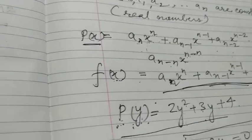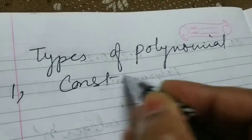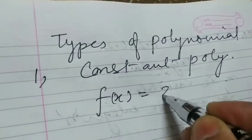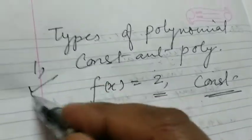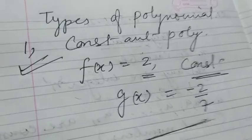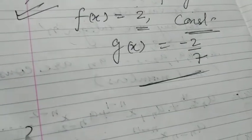On the basis of the degree of a polynomial, we have various types of polynomials. The first type is the constant polynomial. For example, f(x) = 2, or g(x) = −2/7. You can see that only a constant term is involved, which is why this kind of polynomial is called a constant polynomial.